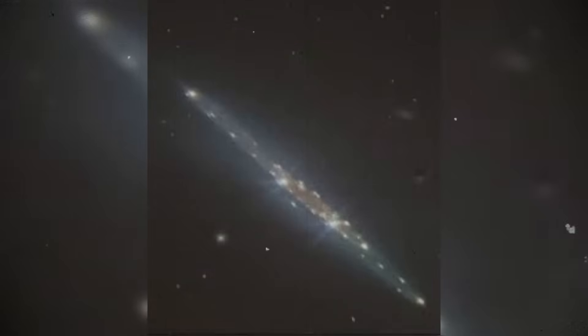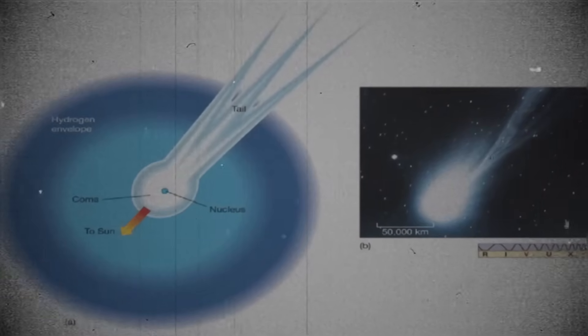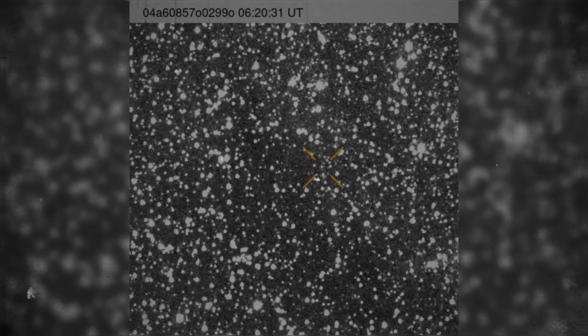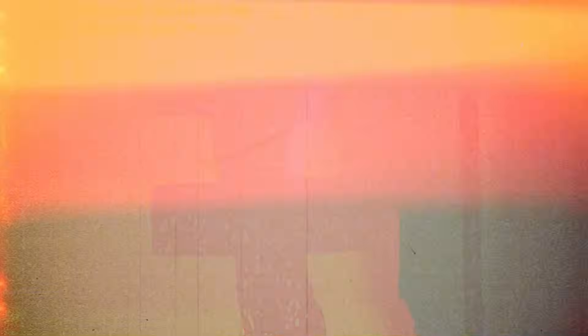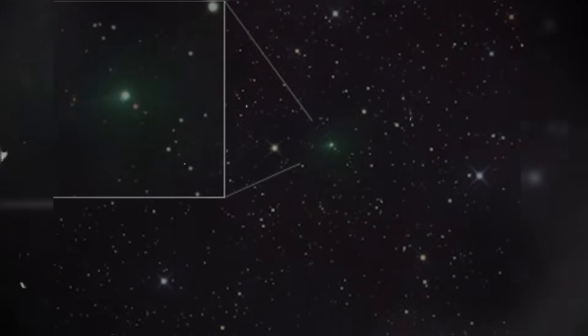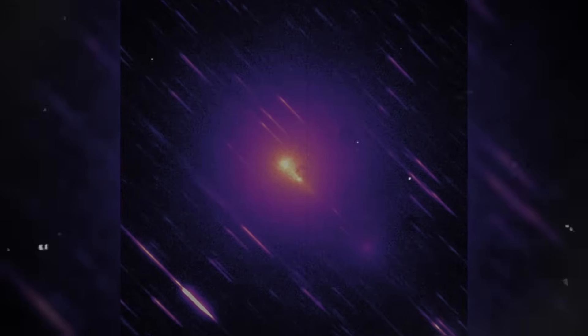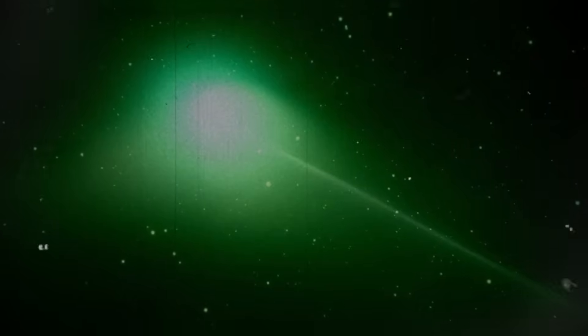The newest orbital simulations of C-2014 UN-271 reveal something subtle but important. While the object remains on a generally predictable inbound path, small instabilities have begun to appear in its trajectory. These deviations are extremely small, measured in fractions of a degree, but they repeat often enough that researchers no longer believe they are random. Instead, they follow a gentle rhythm, almost like a pulse. The timing of these shifts suggests that they may be linked to the internal venting activity identified in previous chapters. As trapped volatile materials inside UN-271 warm and expand, they release gas through the porous crust in small bursts. These releases do not produce the violent jets seen in comets near the sun. Instead, they act more like pressure valves, releasing energy through slow, steady outflows. Even though the outflow is mild, the massive scale of the object amplifies the effect. A tiny release from a 100km body can still generate measurable force.